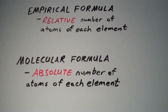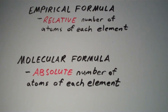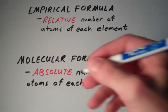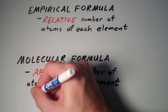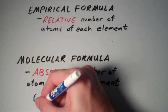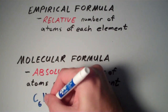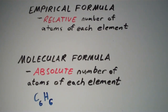Suppose I have a compound that has six carbons and six hydrogens. The molecular formula of this compound would be C6H6. So what is the empirical formula?